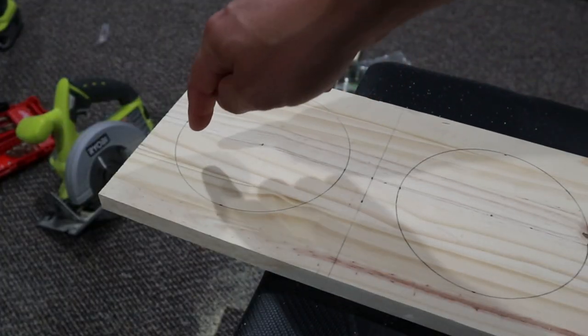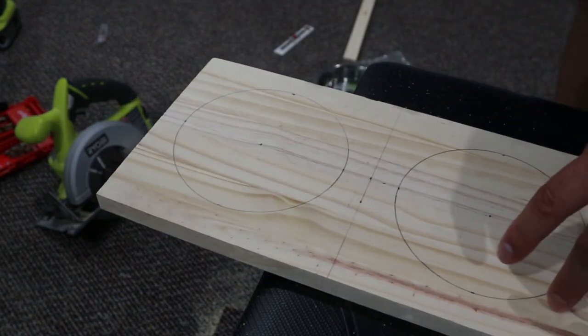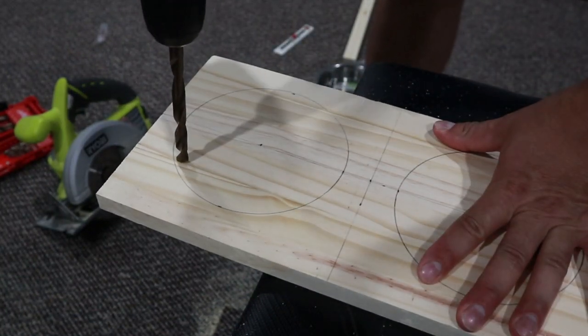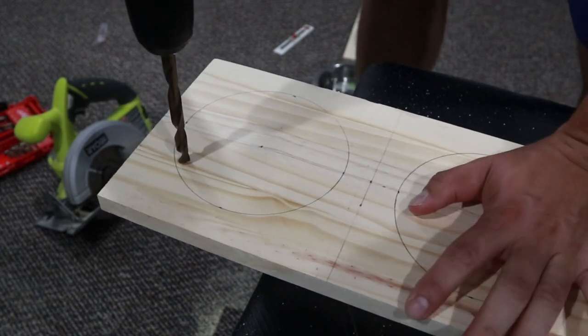I'm going to drill a starting hole inside of each one of these circles so I can get the jigsaw in there. Try to get it as close to the edge as I can, but I don't want to go outside of that line.